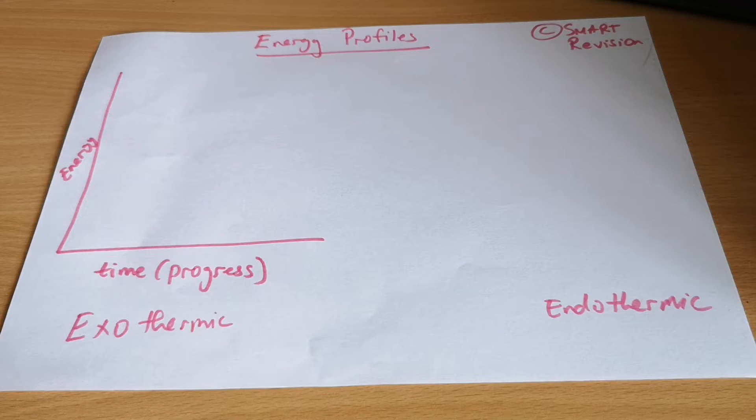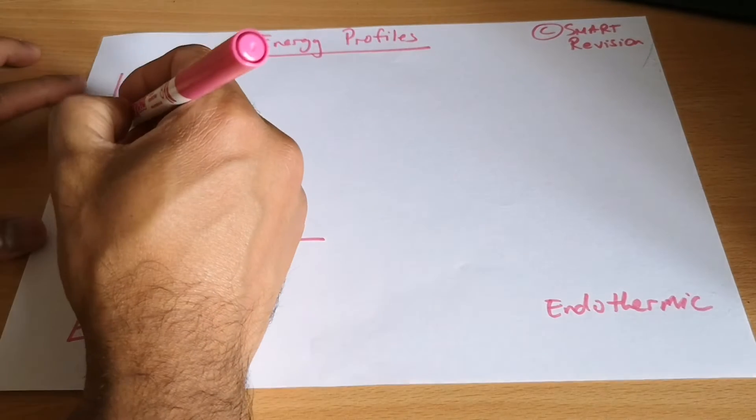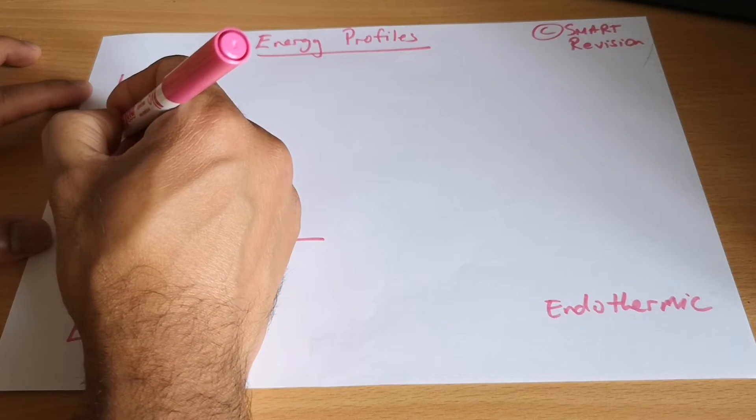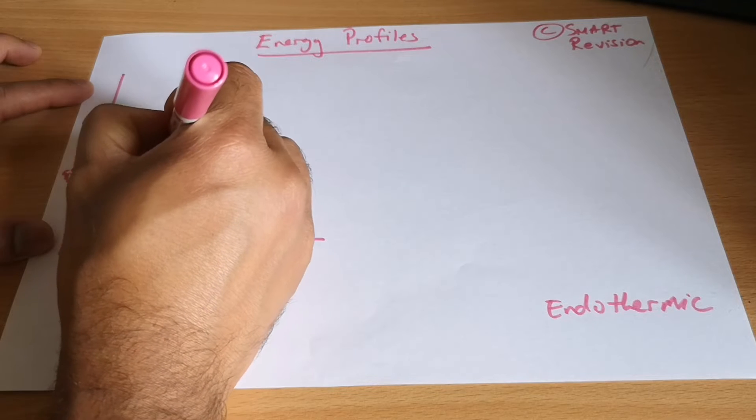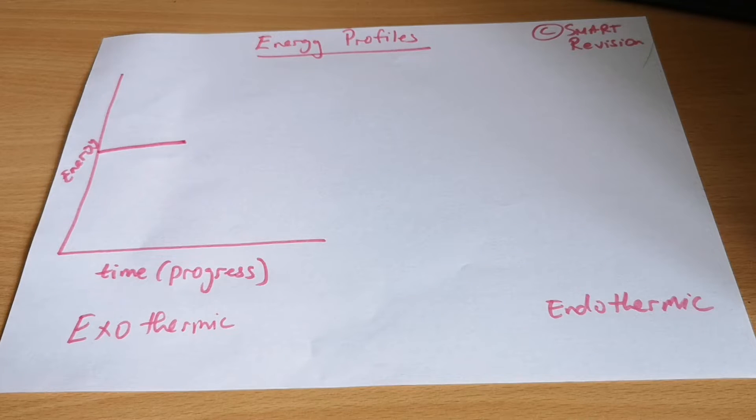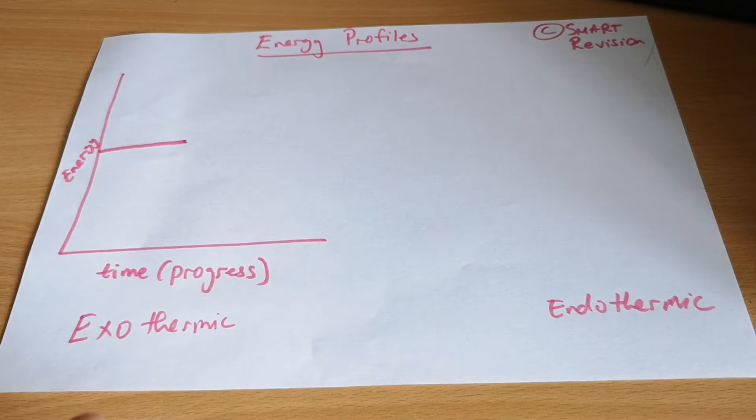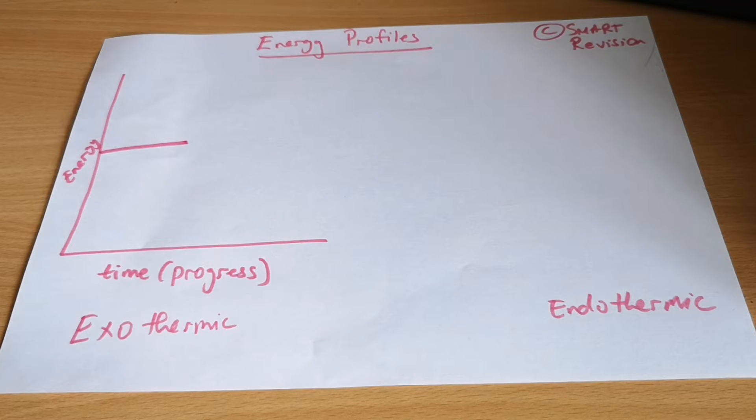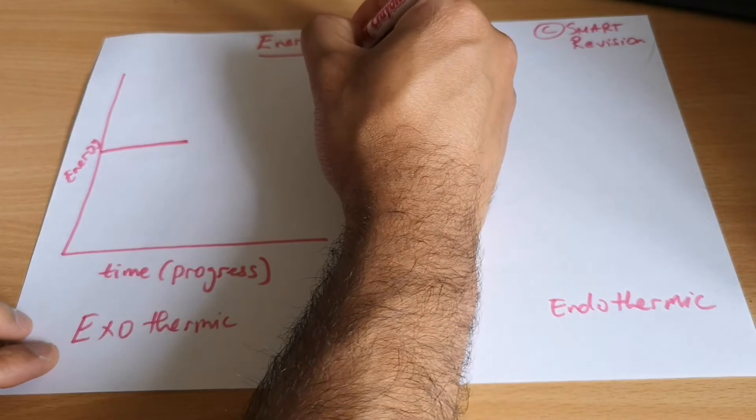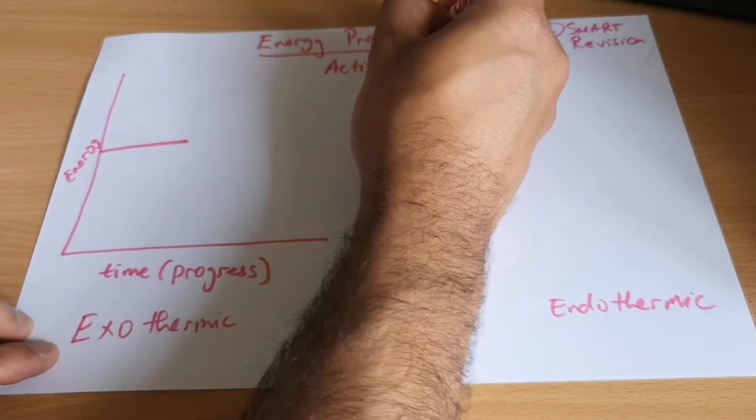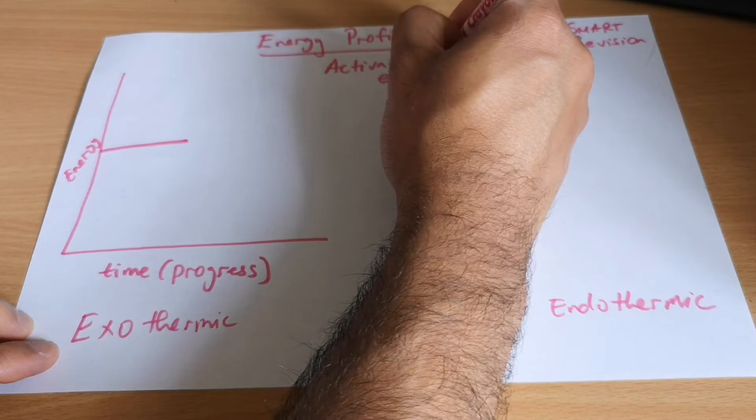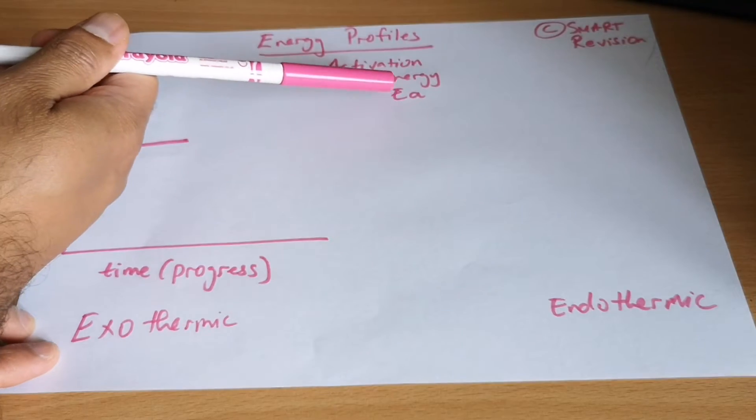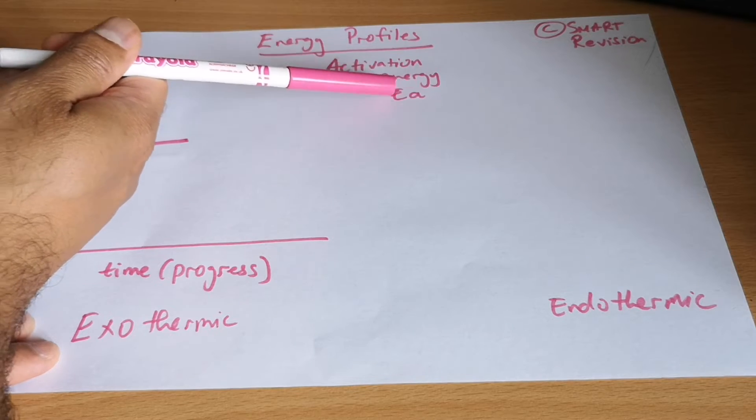In an exothermic reaction, the amount of energy that the reactants have is quite high already. This is not going to react by itself. We need to do something or it needs to get something to actually have a successful reaction, which is what we call activation energy, sometimes written as EA, that means energy activation or activation energy.